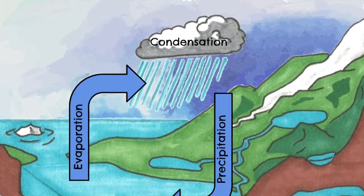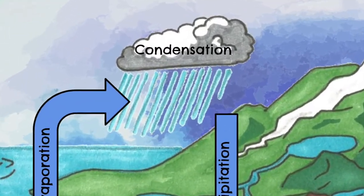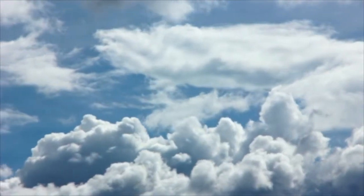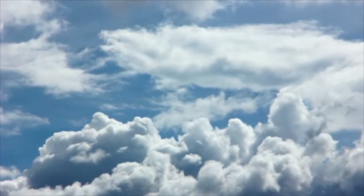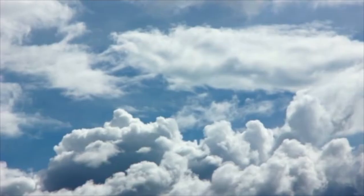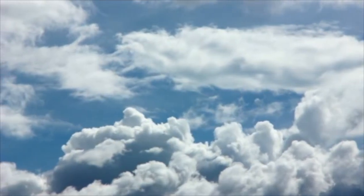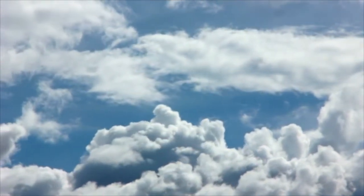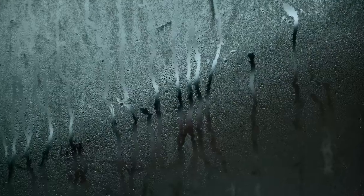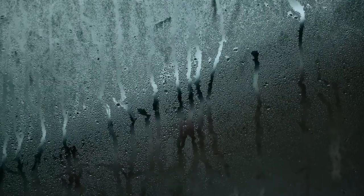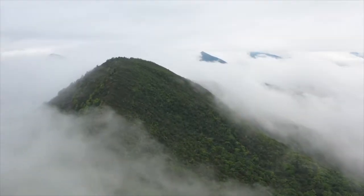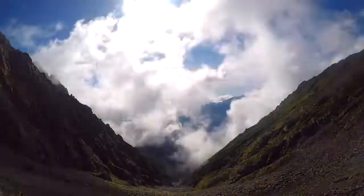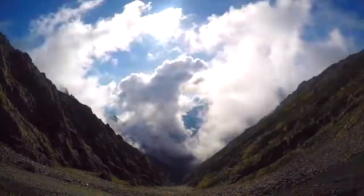The next stage of the water cycle is called condensation. Condensation is where clouds come from. As the water vapor rises up into Earth's atmosphere, it cools and turns back into liquid water. The liquid water droplets are very small — they cling together to form clouds. Air currents high up in the atmosphere move the clouds around the globe.